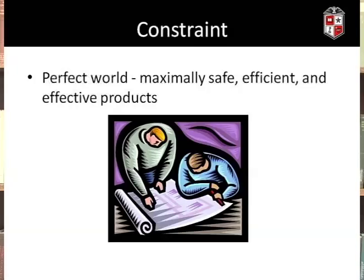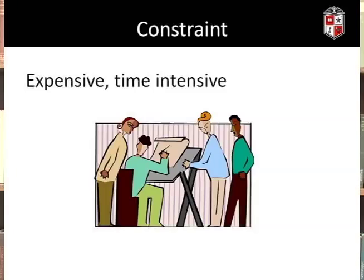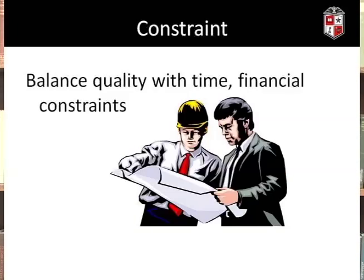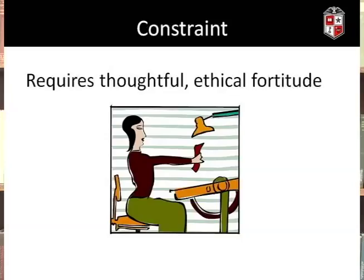A key part of Sarah Fodaker's definition is 'design under constraint,' and constraint is very important. In a perfect world, engineers would be able to design and deploy products that are maximally safe, efficient, and effective. But in the real world, this would be prohibitively expensive and time-intensive. Engineers must often balance quality considerations with time and financial constraints. An incredibly safe car that is unaffordable to all but a very few is not a very good design — it doesn't really benefit people. This balancing act requires a great deal of thoughtfulness and ethical fortitude.